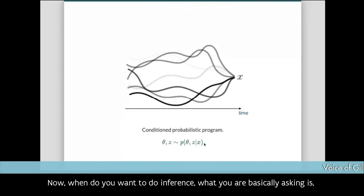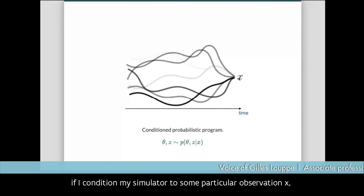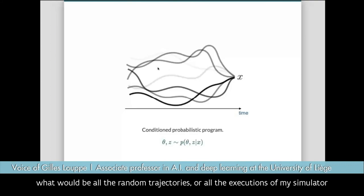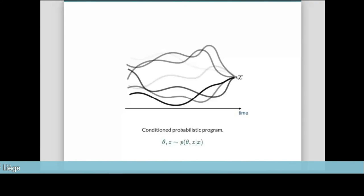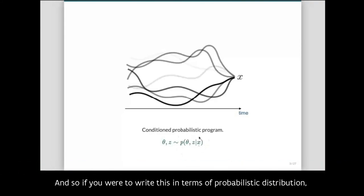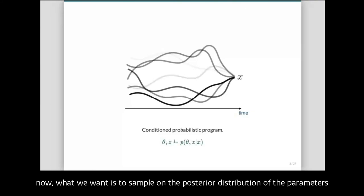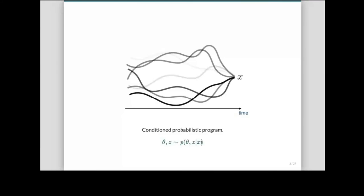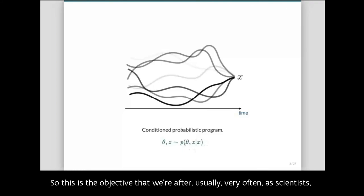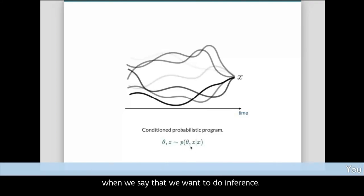That corresponds to sampling from the joint prior distribution of parameters — the thing you want to infer — of some latent variables z corresponding to random processes in the simulation, and x, the final output you can observe. When you want to do inference, you ask: if I condition my simulator on a particular observation x, what are all the random trajectories that would arrive at this observation? You want to sample from the posterior distribution of parameters and random trajectories z conditioned on that particular observation.